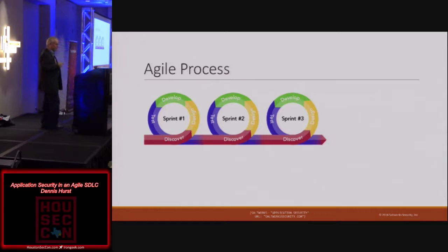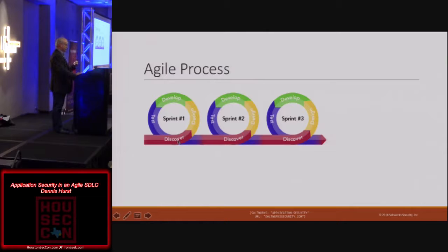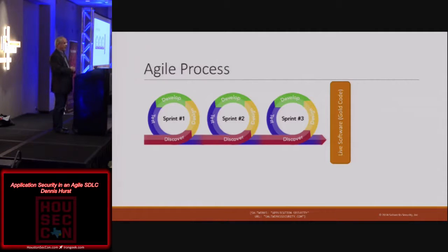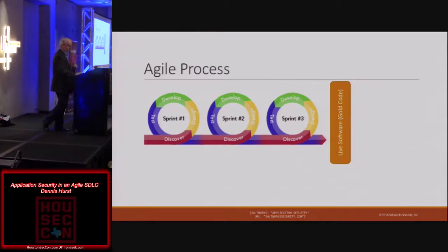In a more formal agile process, you discover, design, develop, test, get user acceptance, and that is finished work — then you move to the next phase. When security gets involved at the end of this process, this is not software going back to development — it's gold, it's shipping. If you're getting involved way down at the end, it won't work. You're going to have to delay a release and it's on you. You've got to get involved in the stream much earlier in the process.